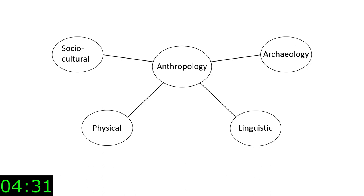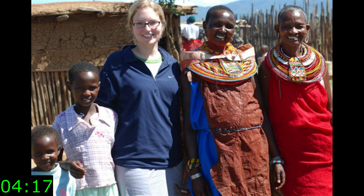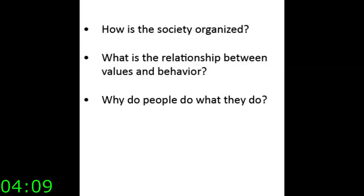There are some overlaps between the subfields, but those are going to be the four main ones. Sociocultural is both social and cultural anthropology, but since they go hand in hand, they're often grouped together — at least they are in the US; Europe differentiates the two. They study present-day cultures around the world and want to understand how people live in societies and what makes their lives meaningful. Common questions sociocultural anthropologists ask are: How is a society organized? What is the relationship between values and behavior? And why do people do what they do?